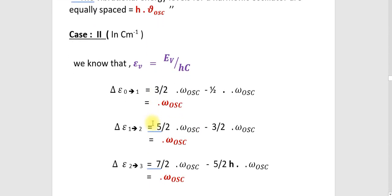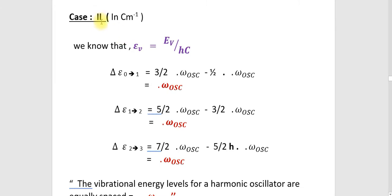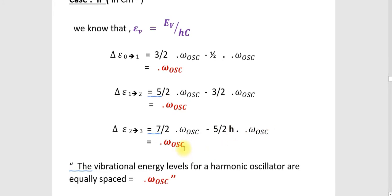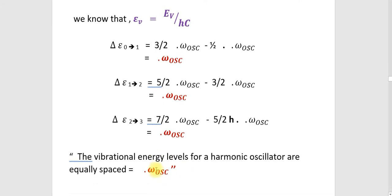We are now finding this spacing in centimeter inverse — that is Case 2. We are finding the value in wave number. Delta ν̃ from 0 to 1 equals 3/2 omega_oscillation minus half omega_oscillation, giving omega_oscillation. Delta omega from 1 to 2 is 5/2 omega_oscillation minus 3/2 omega_oscillation, also omega_oscillation. Delta omega from 2 to 3 is 7/2 minus 5/2 omega_oscillation, again omega_oscillation. Therefore, the vibrational energy levels of a harmonic oscillator are equally spaced in centimeter inverse also, and the value is omega_oscillation.